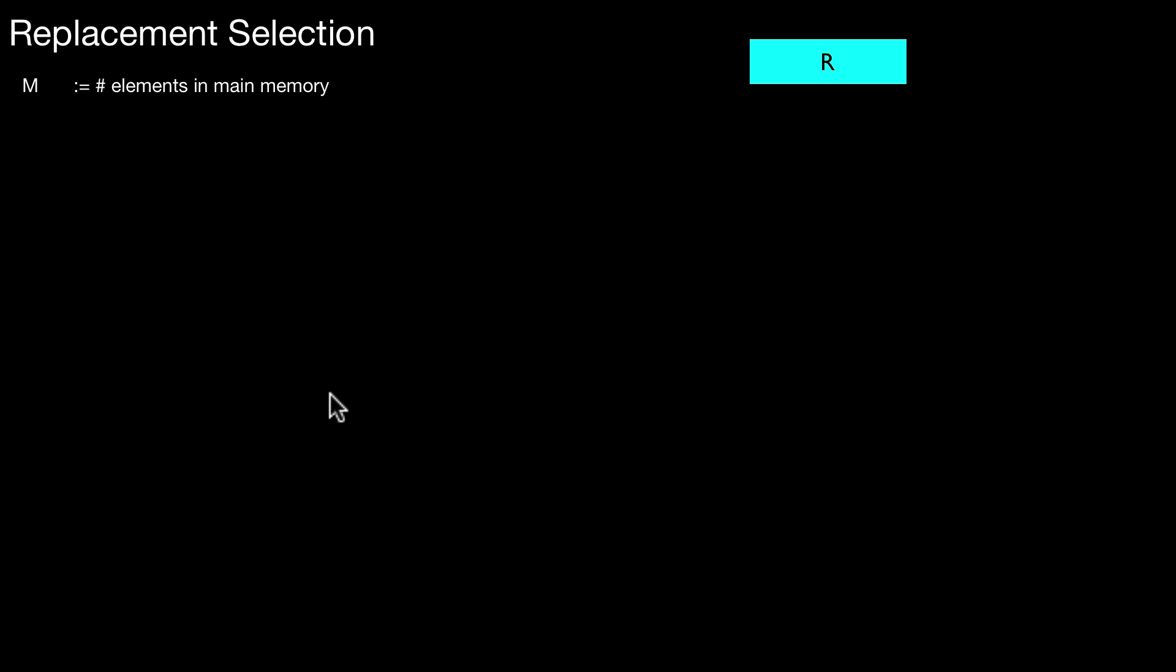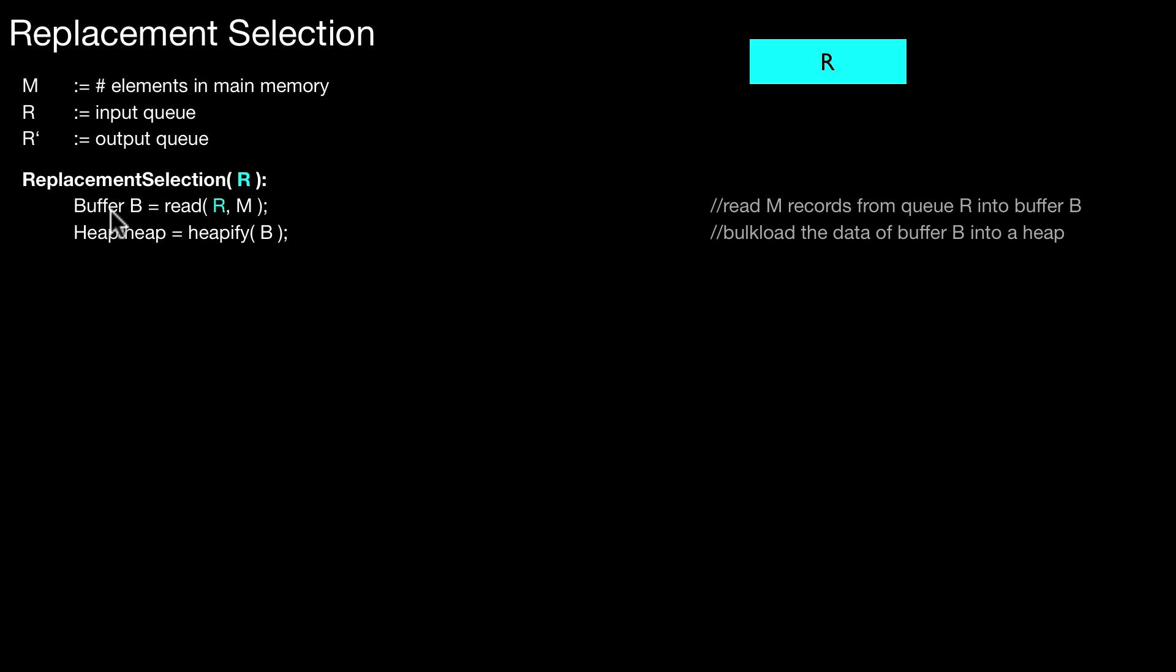So how does the pseudocode look like? So assume we have capital M, that's the number of elements in main memory that we can use. We have R that is the input queue and R' is the output queue. How does this work? So replacement selection takes this parameter, the input data to sort. And the first thing we do is we fill main memory, we fill this buffer with M records. So whatever memory is available, it's filled with data. So here you create this heap property. That's a bulk loading of the heap structure. That's also called a heapify operation in some textbooks.